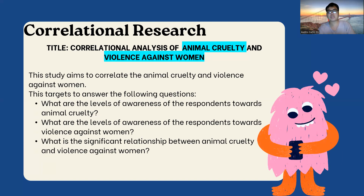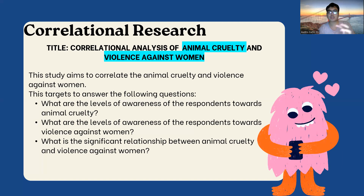For correlational research, the first question is: 'What are the levels of awareness of the respondents towards animal cruelty?' Second: 'What are the levels of awareness of the respondents towards violence against women?' Then the last question is: 'What is the significant relationship between animal cruelty and violence against women?' The keywords of your research title can help you in making the statement of the problem, so do not be afraid of making research questions. I hope this can help you in making the statement of the problem for descriptive, causal comparative, and correlational research.